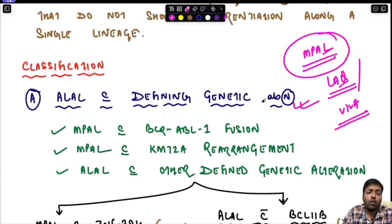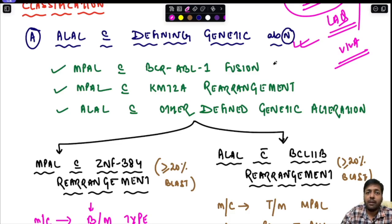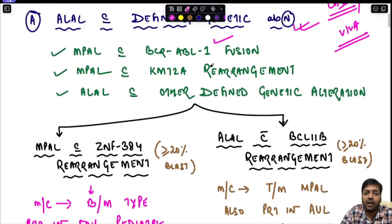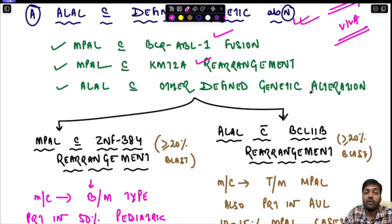Under acute leukemia of ambiguous lineage with defining genetic abnormalities, the first entity is MPAL with BCR-ABL1 fusion. The second is MPAL with KMT2A rearrangement. In the current WHO fifth edition, there is also a new category: acute ambiguous leukemia with other defined genetic alterations.